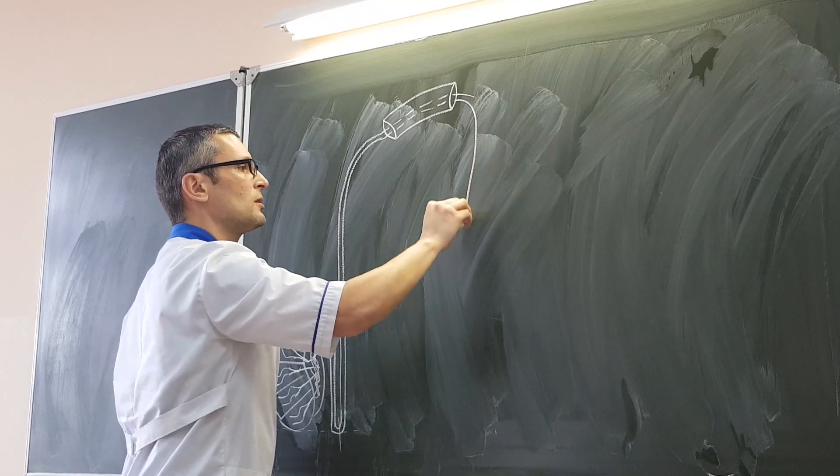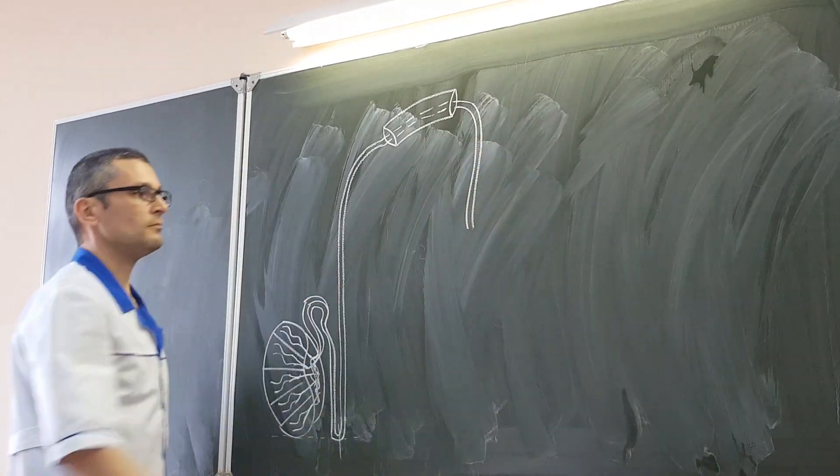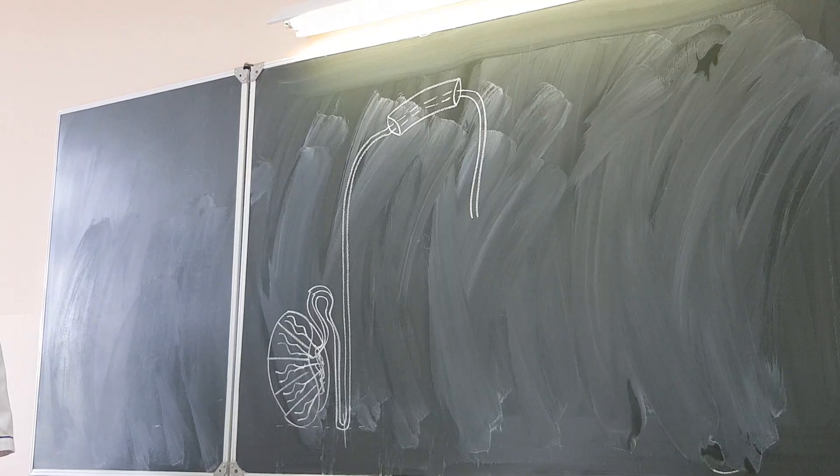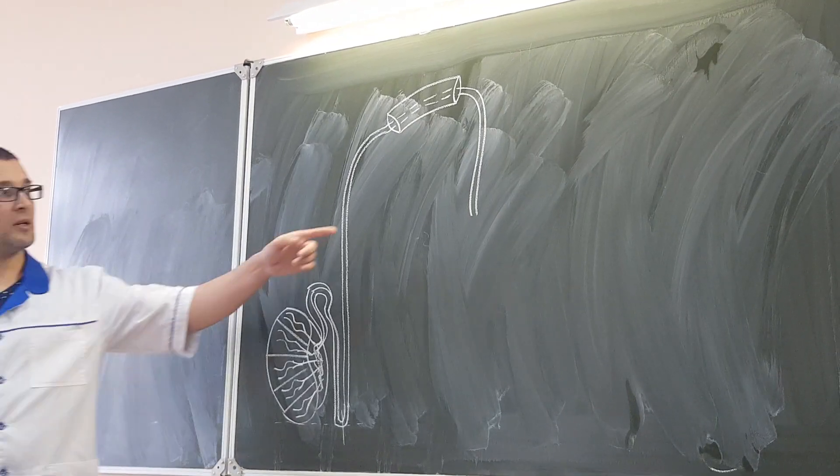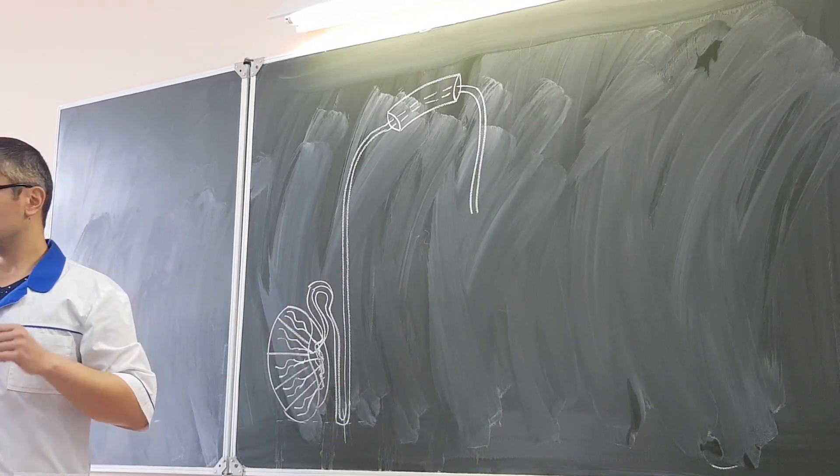And then goes downward to the true pelvis. Goes downward to the true pelvis. In true pelvis, deferent duct goes to the urinary bladder.